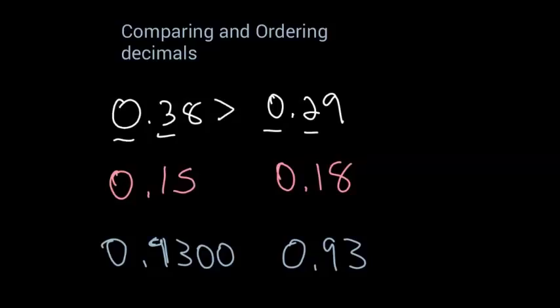Next we got 1500 and 1800. So again start with the zero, they're the same. The tenth place, they're both one. The hundreds place, I got a five and then an eight. Well an eight is greater than a five, so 1800 is greater than 1500. Another way you can think about that is 15 cents is less than 18 cents.